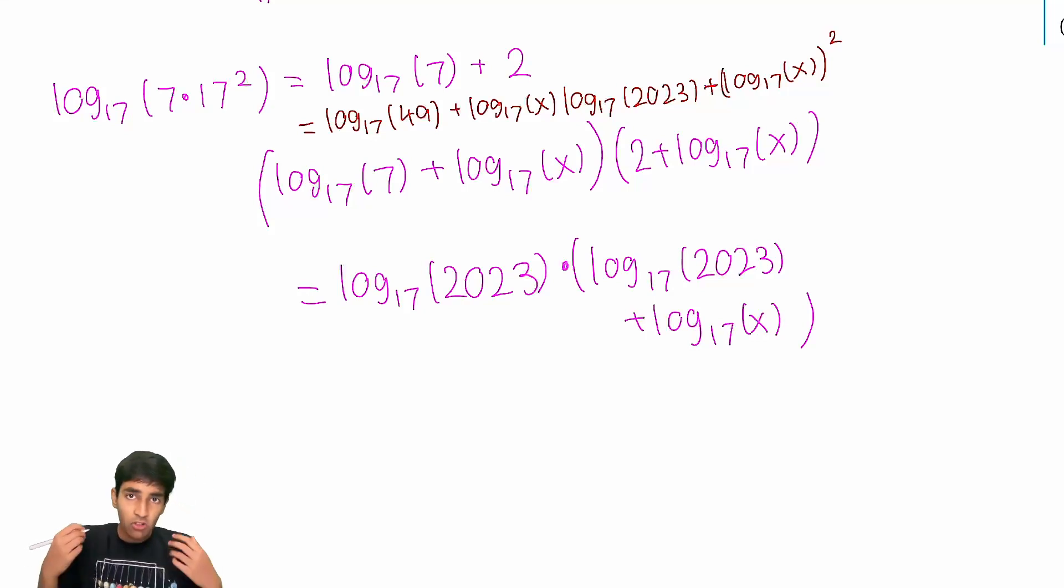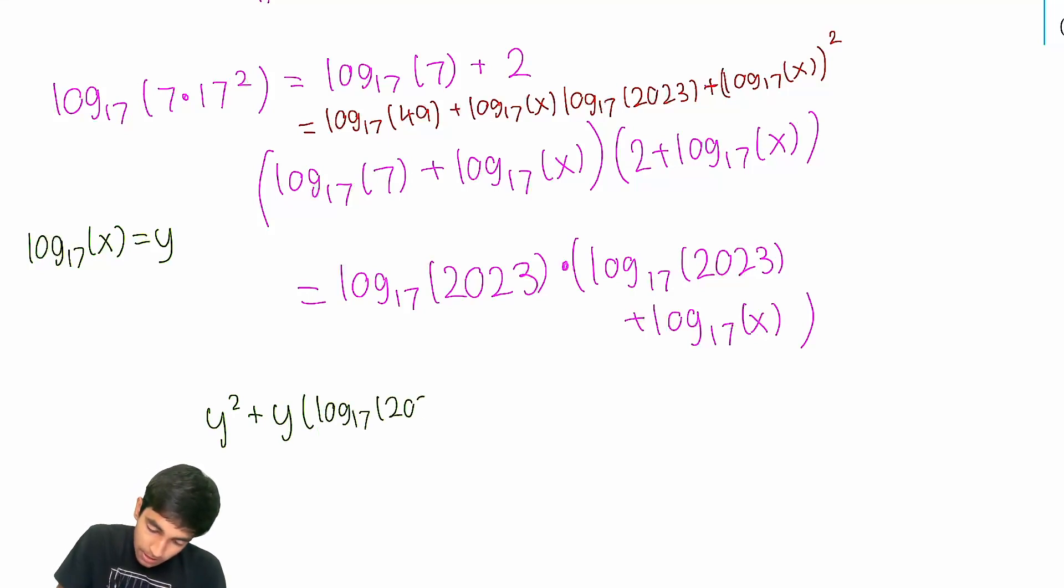This is just log₁₇(x) plus log₁₇(y) plus log₁₇(z). So the idea is, rather than finding the product of the solutions, we're going to find the sum of the solutions to log₁₇(x). And we can do that using our handy Vieta's formulas. So let's just call log₁₇(x) equal to y. I don't want to write the same thing over and over again.